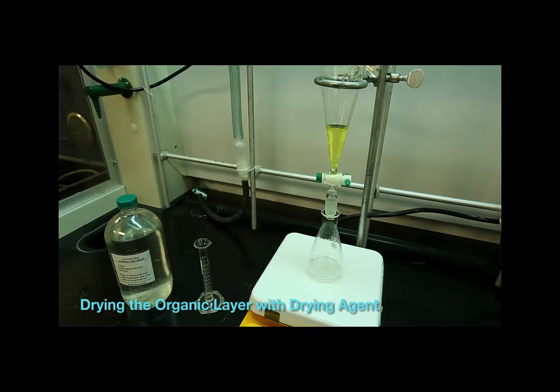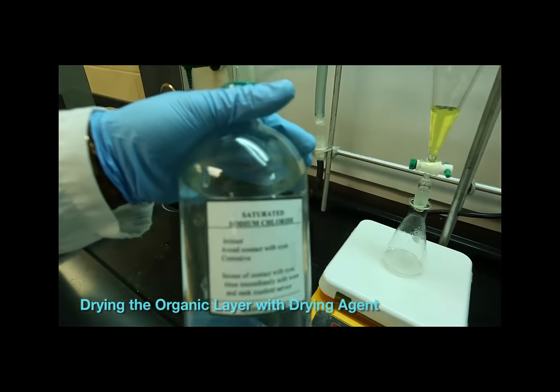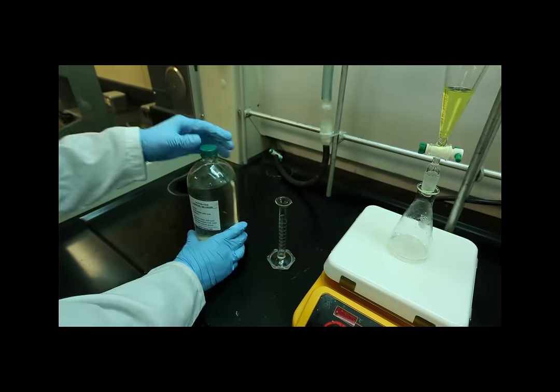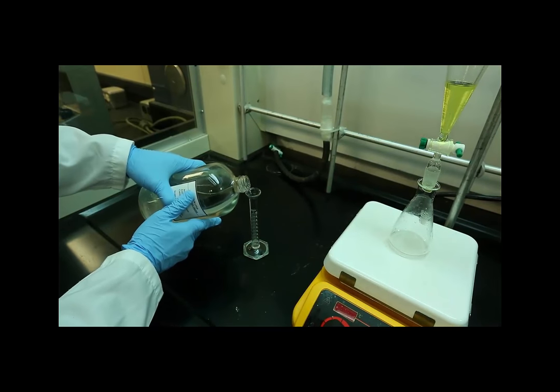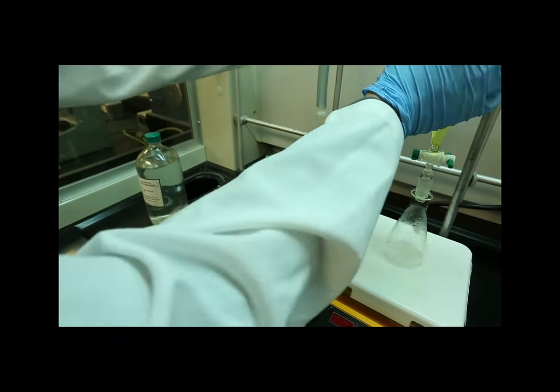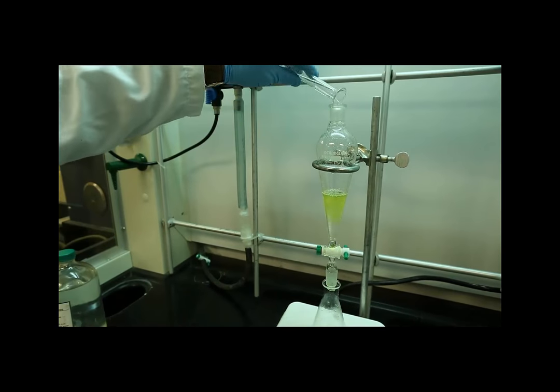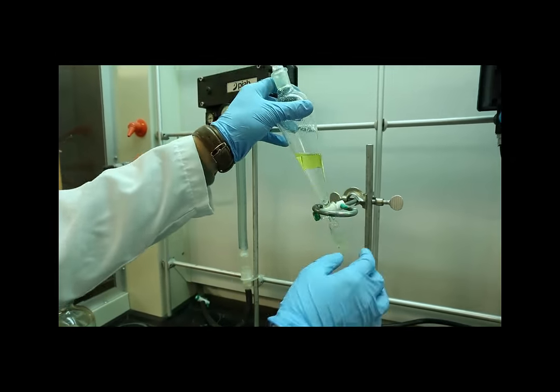Once you have successfully isolated your organic layer in an extraction or washing, it is important to remove any excess water contamination. This is a process known as drying. The water is crudely removed by washing with brine, a solution saturated with sodium chloride.